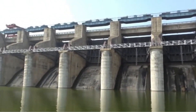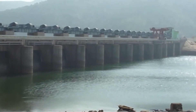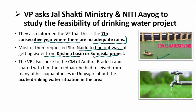Most delegates requested Shri Naidu to find ways of getting water from the nearby Krishna River basin and Somasila project. The Vice President also spoke to the Chief Minister of Andhra Pradesh about the acute drinking water situation in Udhaigiri, and the Chief Minister assured that necessary steps and measures would be taken to address the drinking water shortage.